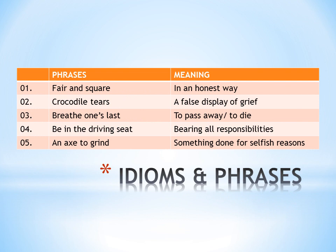Now coming to the idioms and phrases part. The trick is that you have to understand the idiom and learn its meaning. First is: fair and square. Fair means very clean and honest — like you say someone has fair handwriting. So if something is very clean and very honest, we call it fair and square, meaning in an honest way.